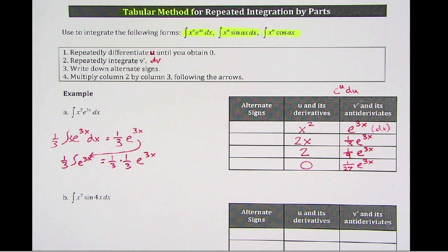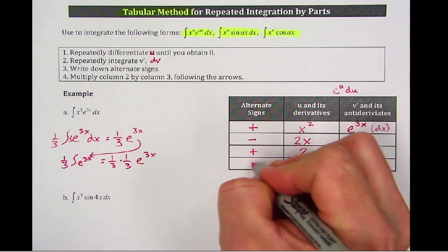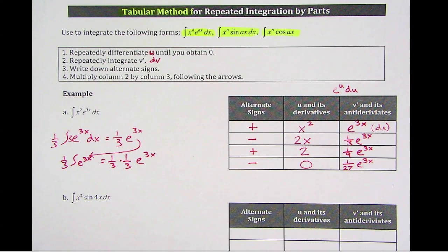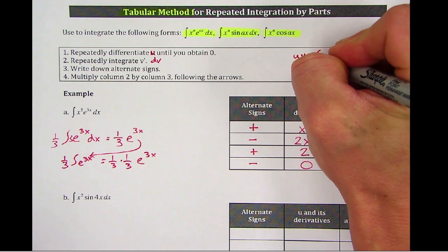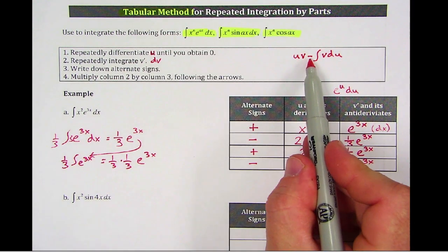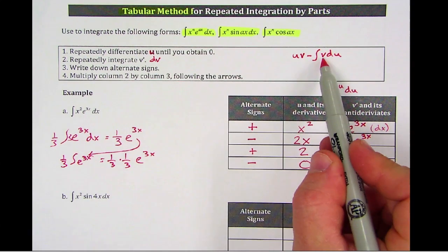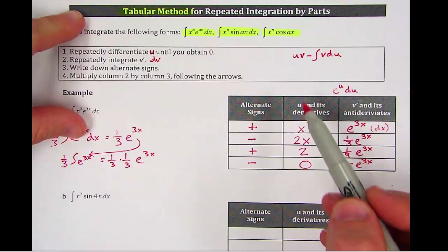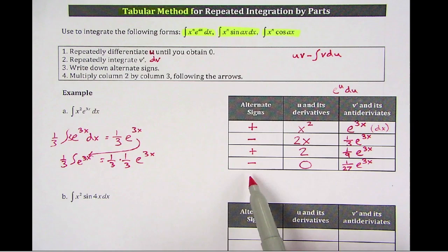Now for the alternating signs thing, we're going to start with positive, and then we go negative, and positive. Do you always start with positive? Always start with positive, and then alternate the signs. The reason is, if we think back to our formula for integration by parts, remember it was uv minus the integral of vdu. So that's why you do minus the integral, so that's why the second one is minus. And then if you have to keep doing integration by parts the second time, you're going to have minus a minus, which is going to be positive. The next time will be minus a minus a minus, we're just back to minus.